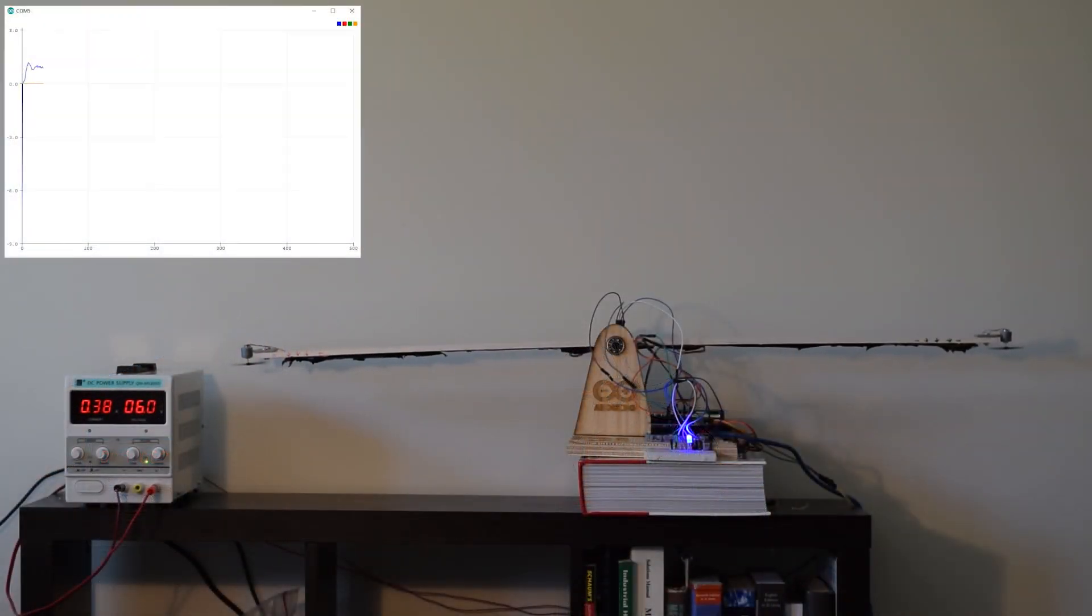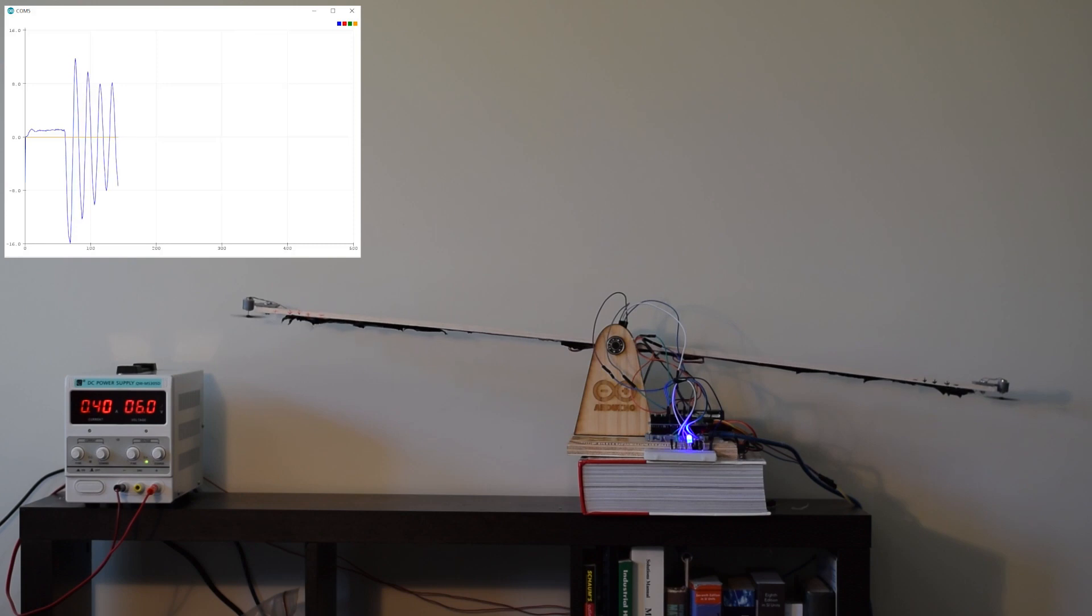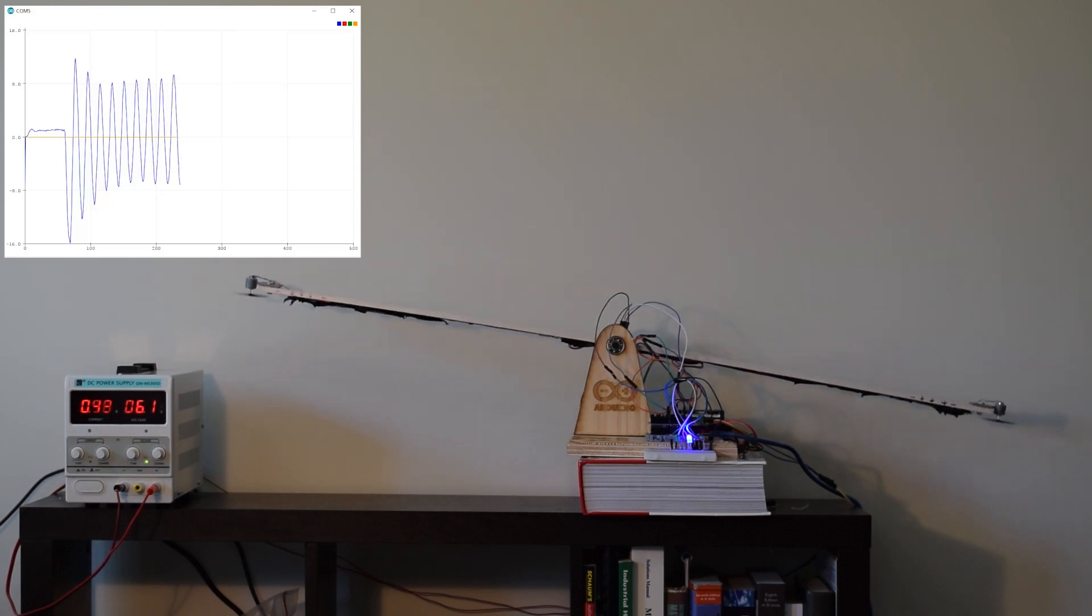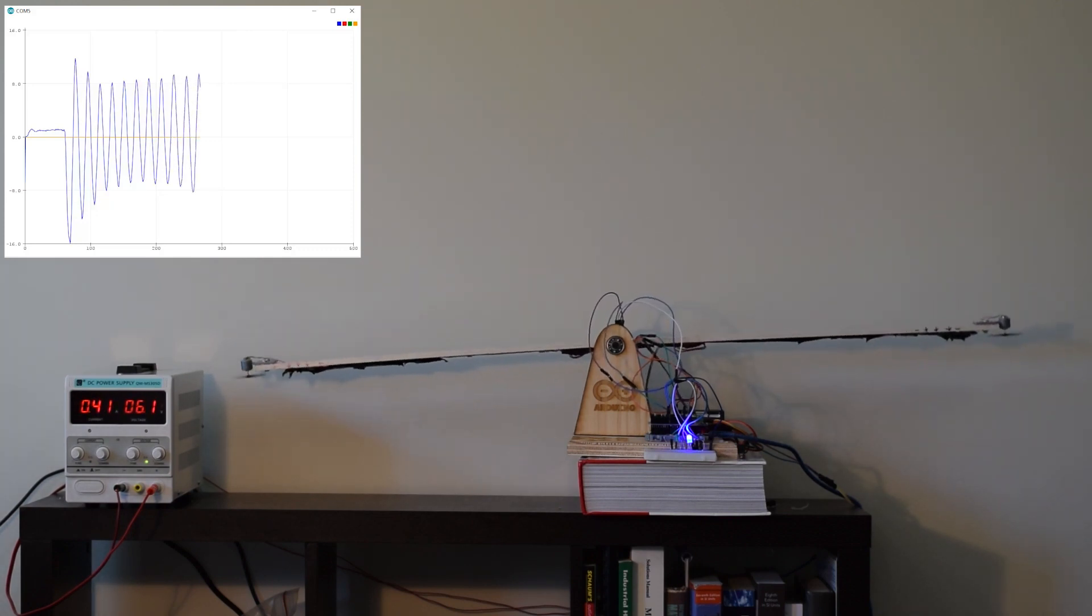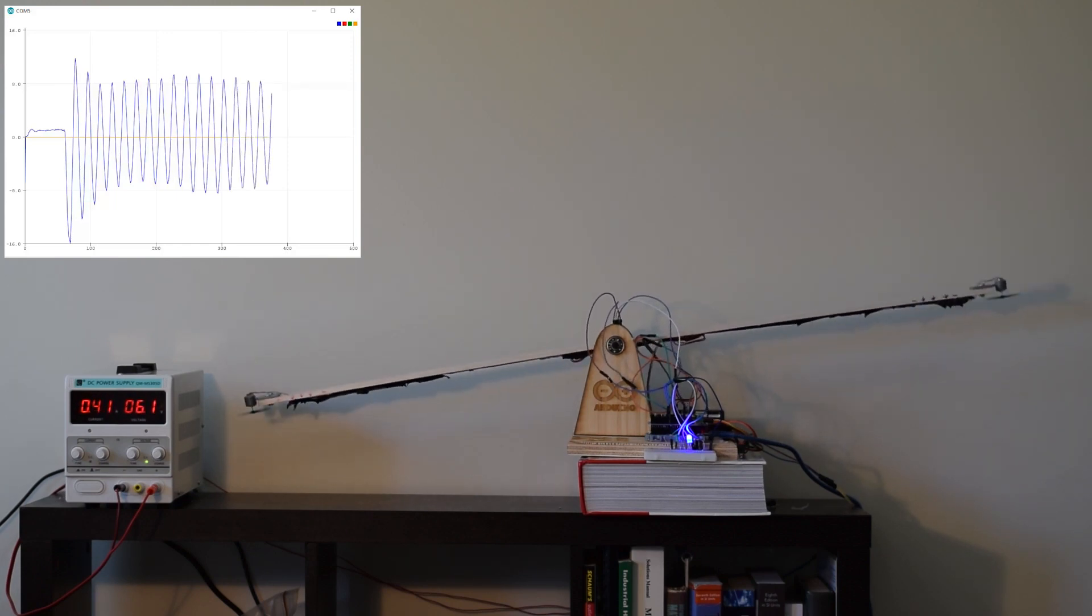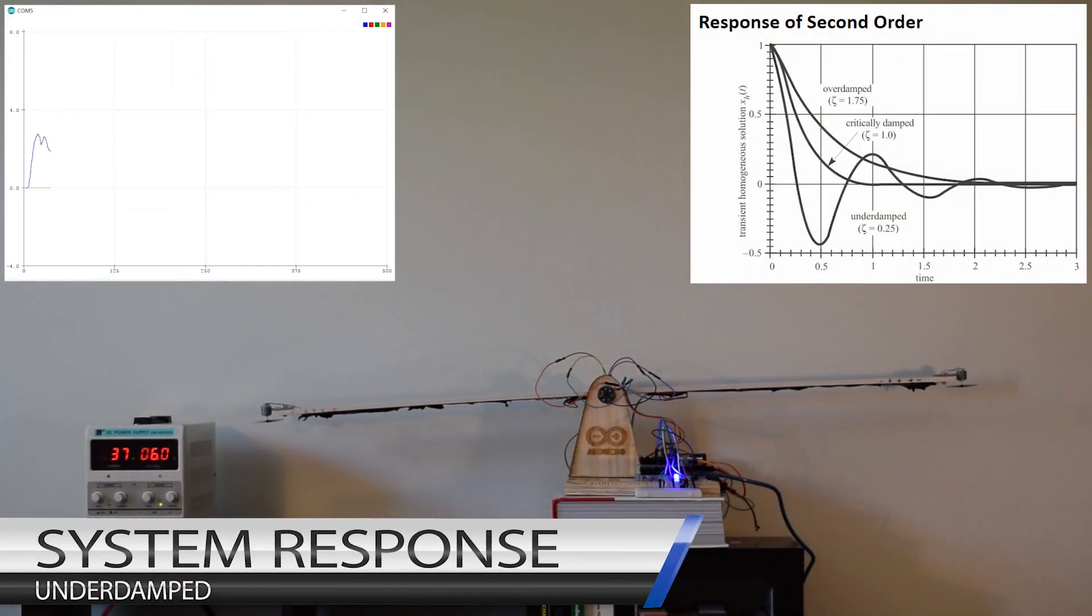When tuning the PID gains, I had a little difficulty determining the KP at which sustained oscillation occurred. To overcome this, I printed the angle data to a serial plotter which allowed the point at which sustained oscillation occurred to be easily found. I then measured the period between these oscillations using a stopwatch and used these values in the Zeigler-Nichols equations to determine my KP, KI and KD gains.